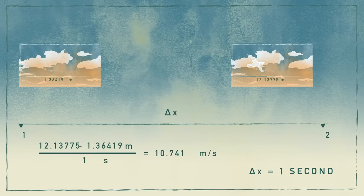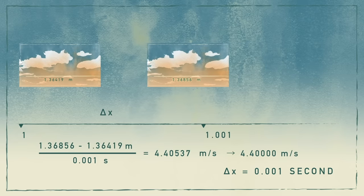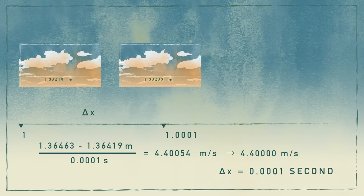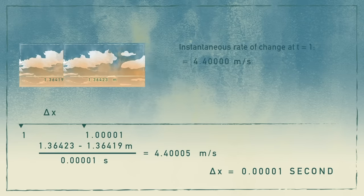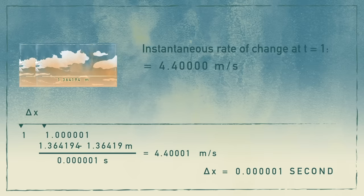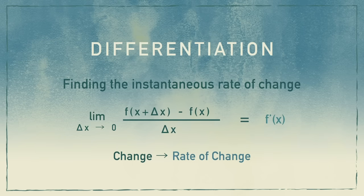As delta x decreases, you'll see the rate of change approaching a certain value. And from there, we can approximate the rate of change at a specific moment. This process is called differentiation.